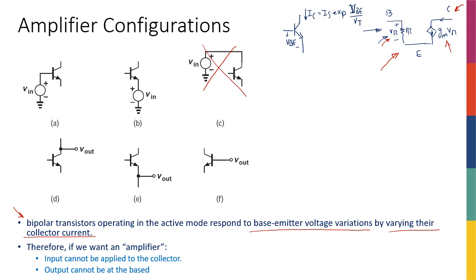The output should be on the collector side, since gm·vpi drives the collector current. This current also affects the emitter current, because the base and collector currents sum at the emitter node. Therefore, the output can be taken from either the collector or the emitter — it cannot be on the base side.